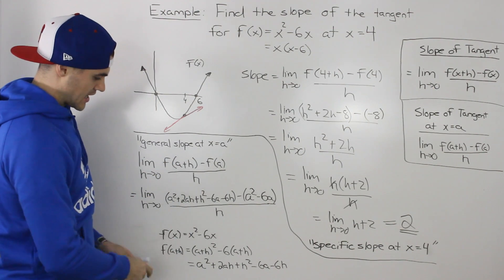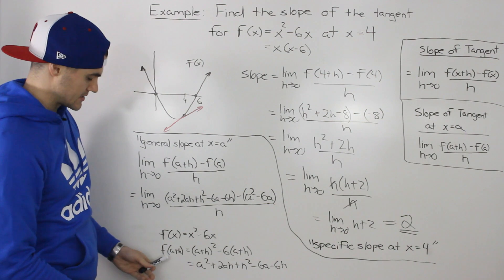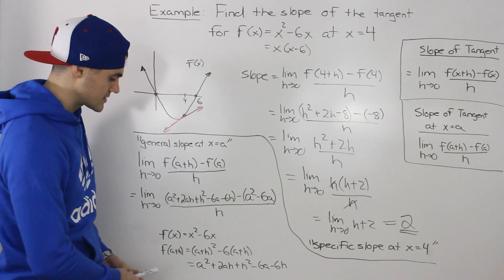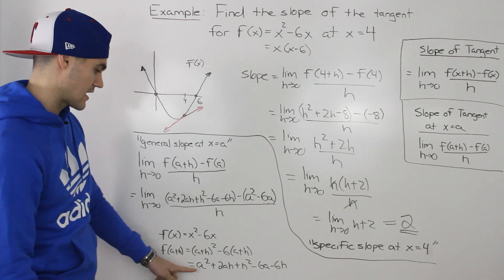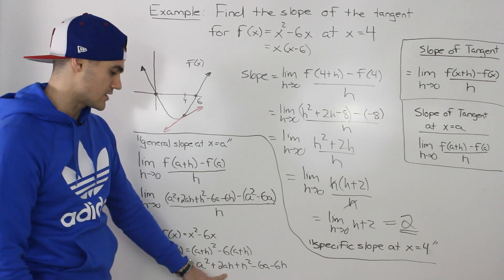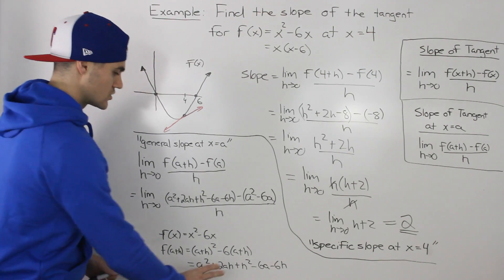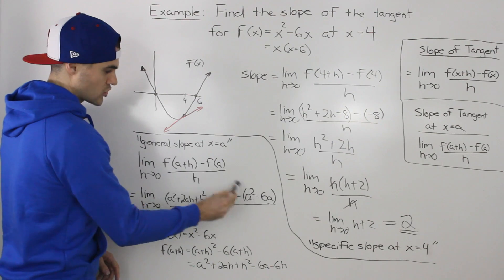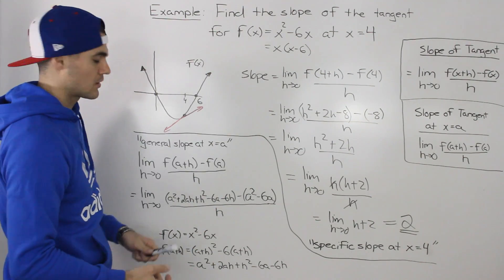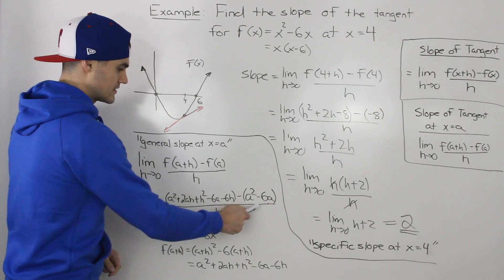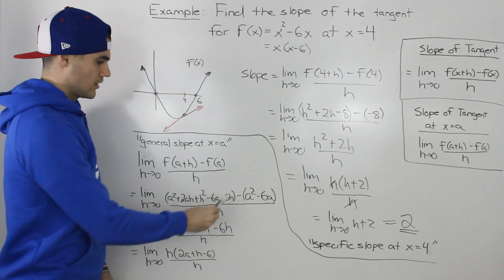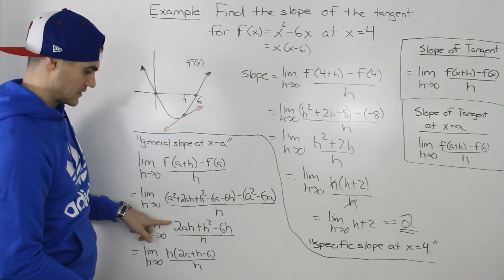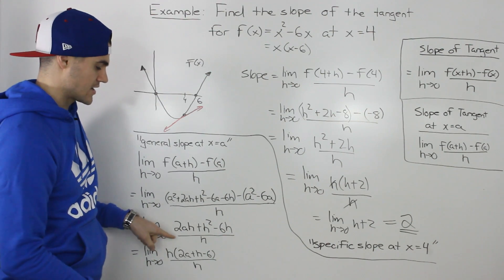For f(a+h), we plug (a+h) into x² - 6x to get (a+h)² - 6(a+h). Foiling and distributing gives a² + 2ah + h² - 6a - 6h. That whole expression is f(a+h). We subtract f(a) = a² - 6a, all over h. Simplifying the numerator: the a² terms cancel and the -6a terms cancel, leaving (2ah + h² - 6h) / h.